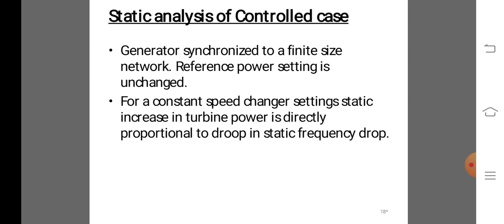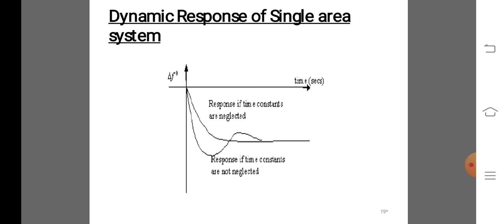This is the dynamic response of a single area system. The integral controller gains need to be adjusted for satisfactory response in terms of overshoot and settling time. Although each generator has a separate speed governor, all generators in the control area are replaced by a single equivalent generator, and the analysis corresponds to this equivalent generator.